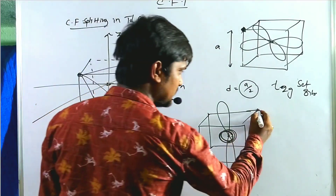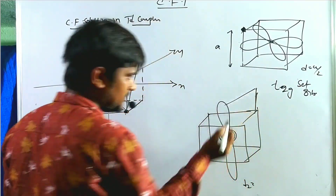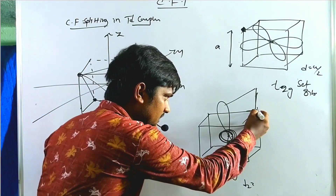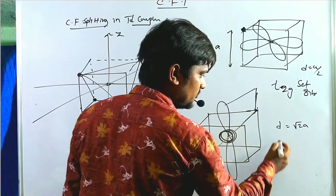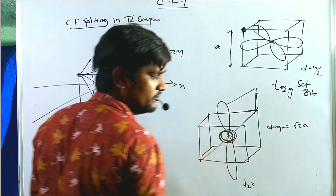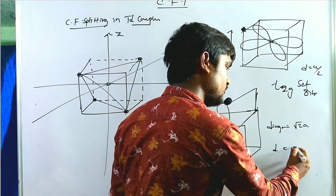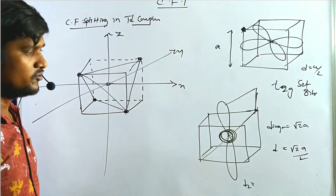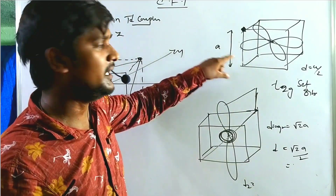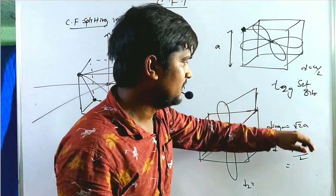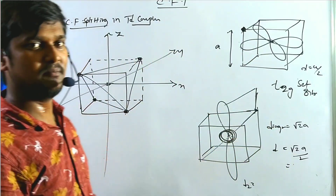For the along-axis (Eg) orbitals, the distance is along the diagonal. Half of the diagonal of the cube is equal to √2a/2, which is approximately 1.7 times a/2. This means the Eg orbitals are farther away from the ligands when compared to the T2g set. So the T2g orbitals are closer to the tetrahedral complex ligands.